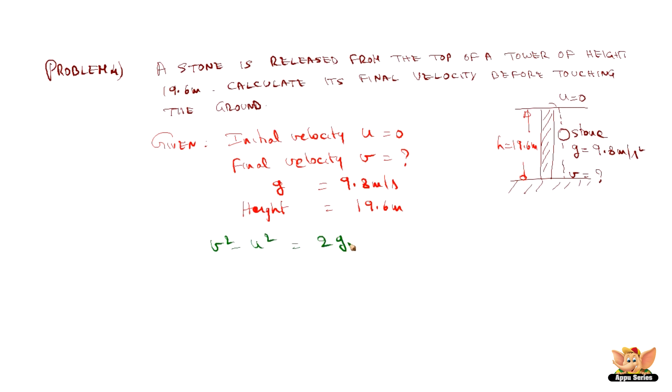Here, u is 0, g is 9.8, and h is 19.6. So v squared equals 2 times 9.8 times 19.6. Therefore, v equals 19.6 meters per second. Just before touching the ground, the stone's velocity is 19.6 meters per second.